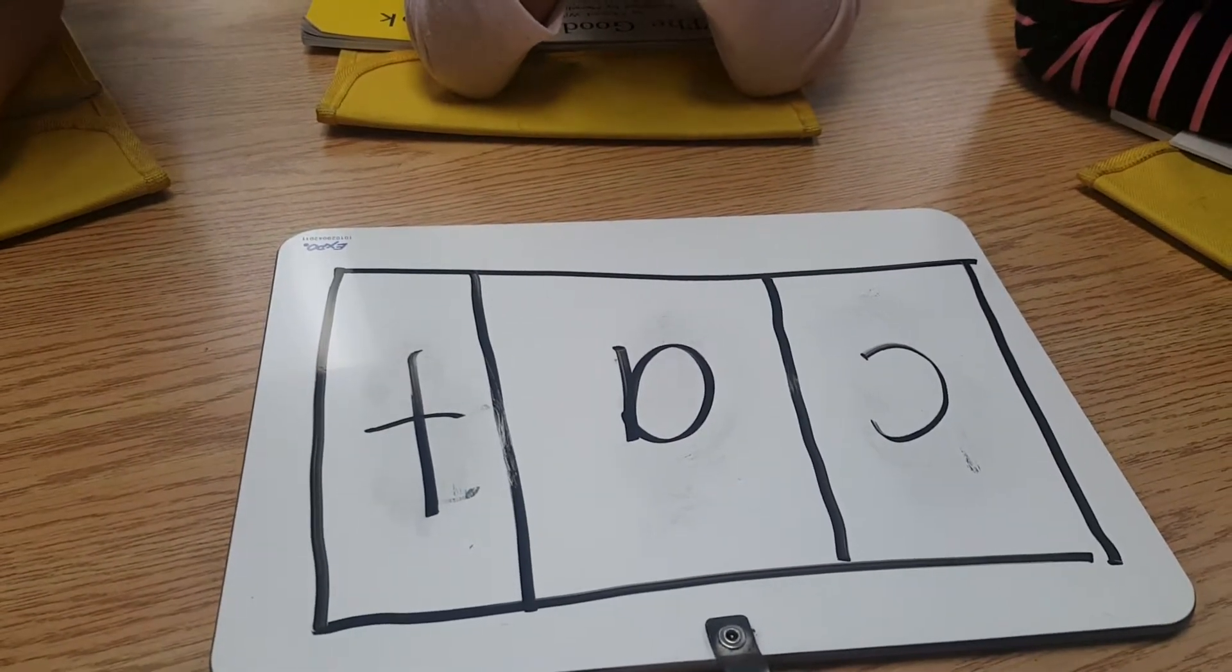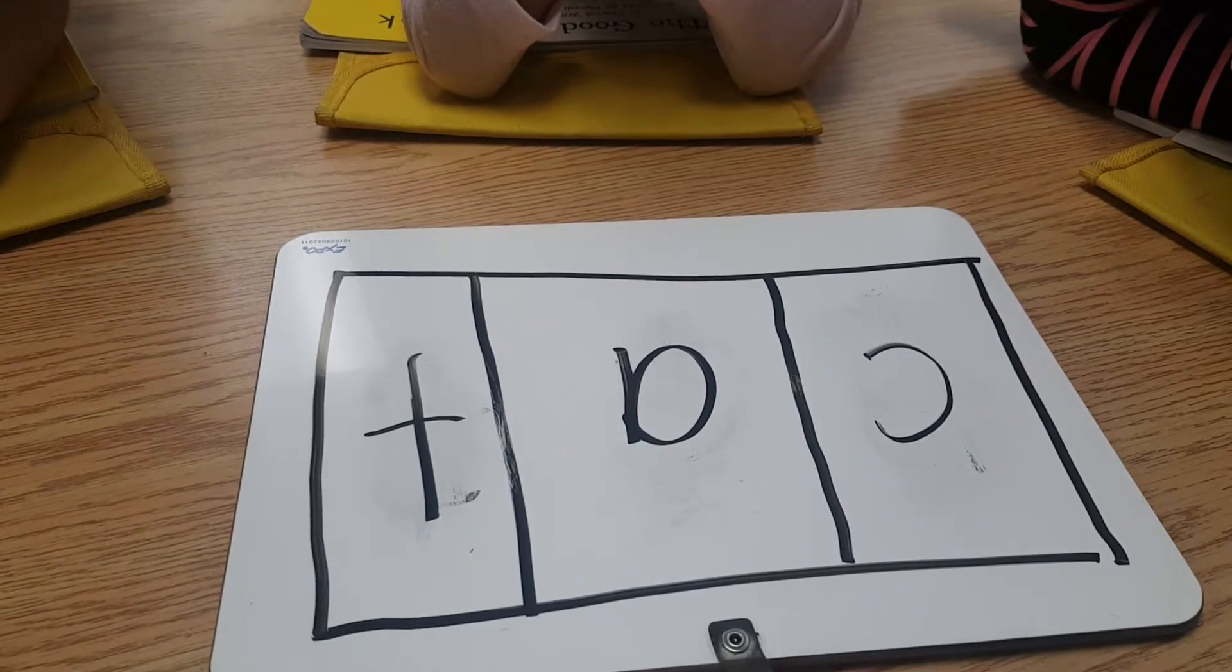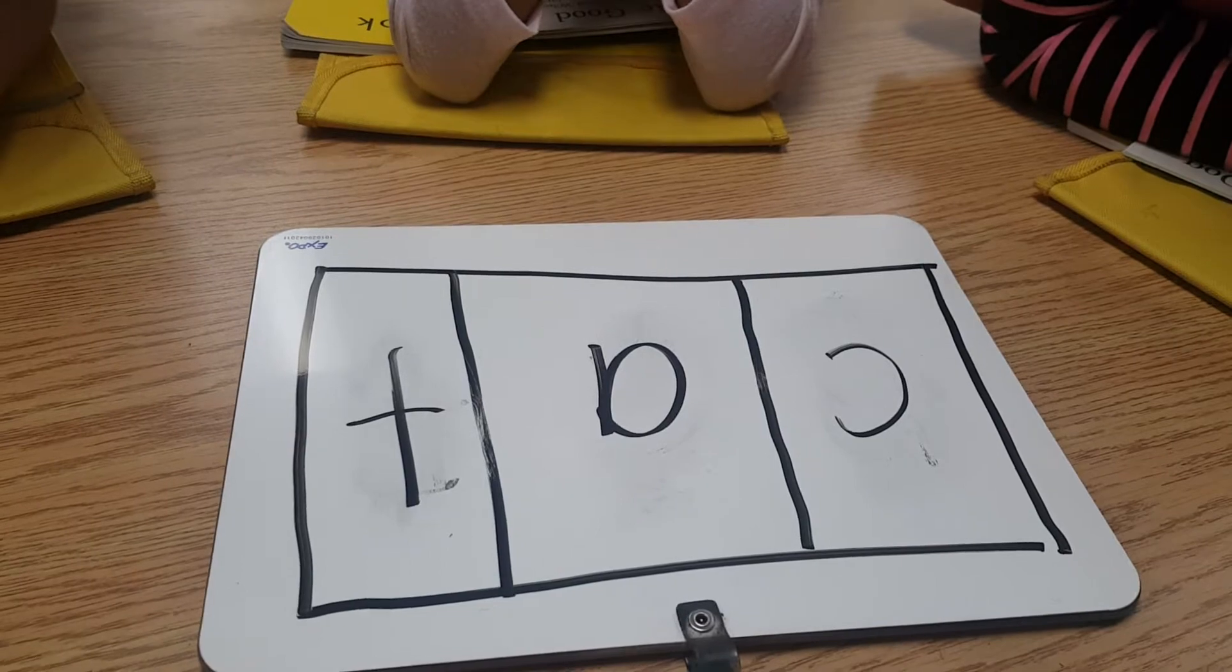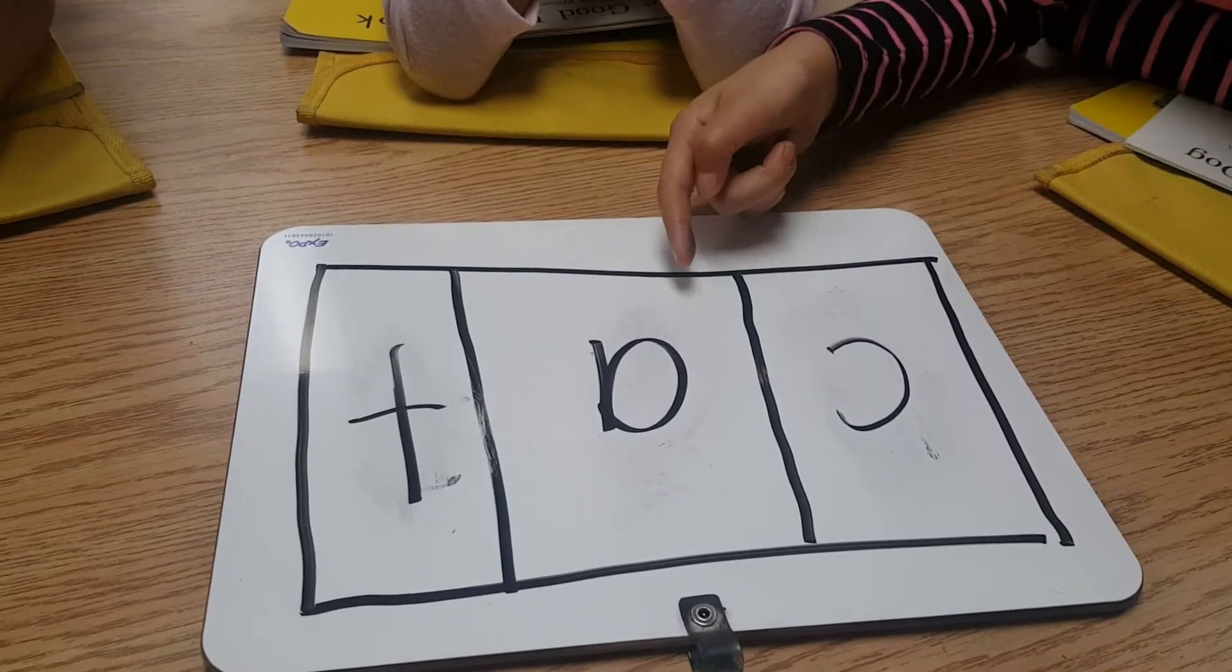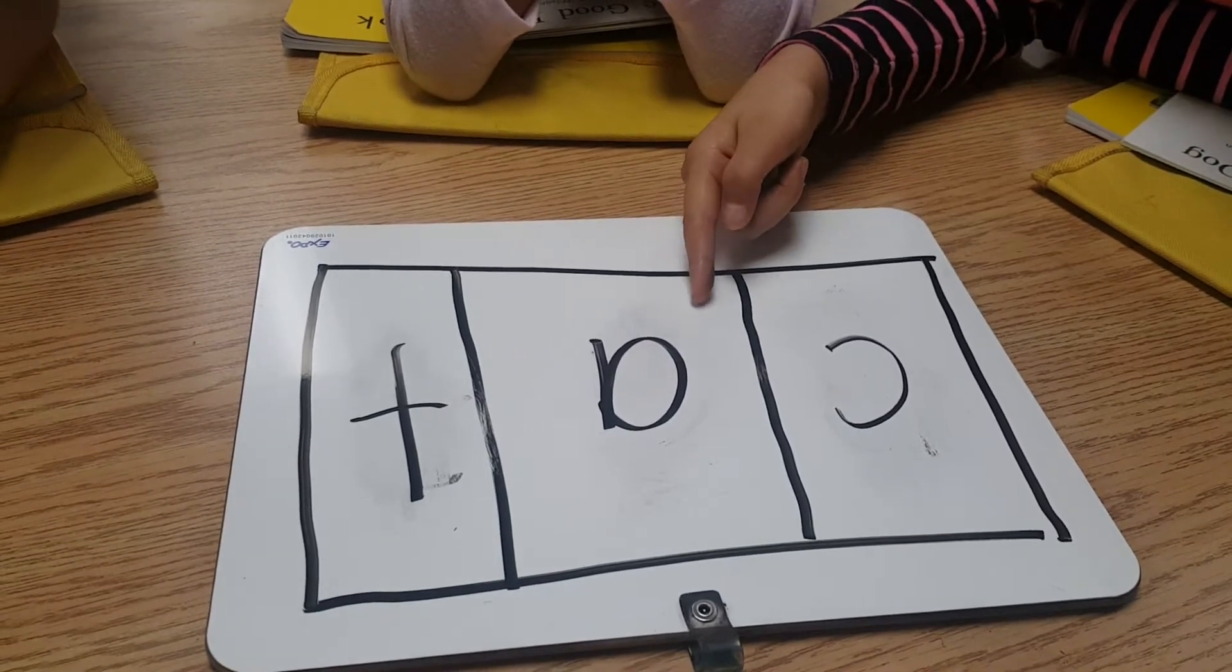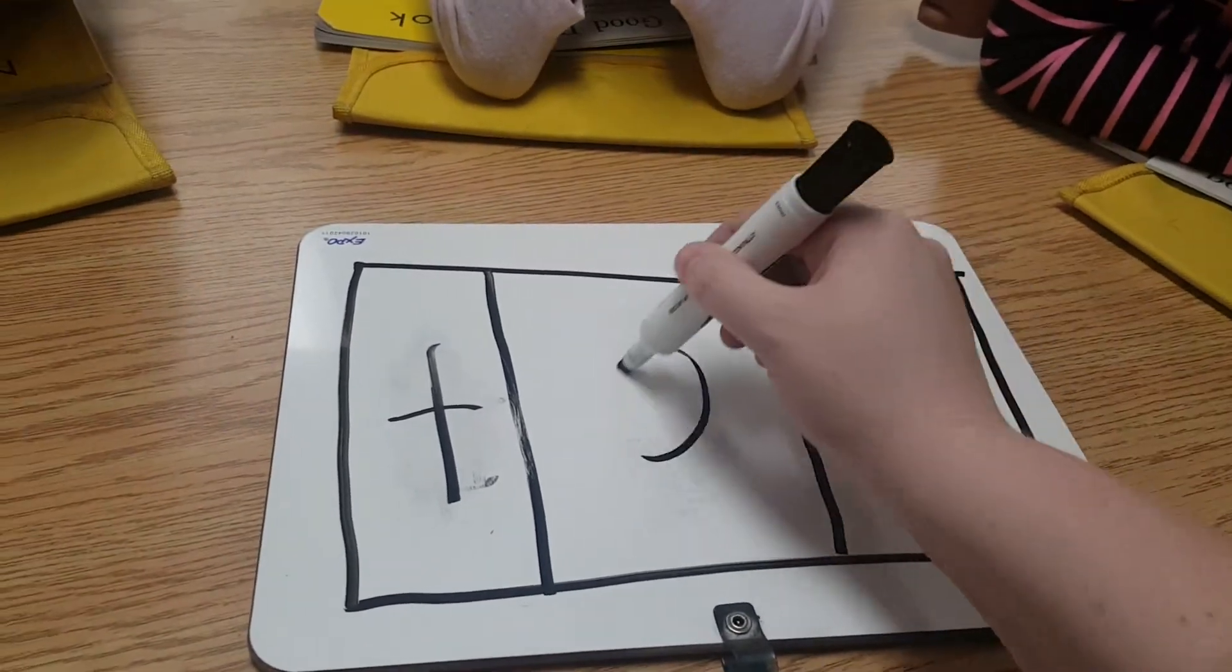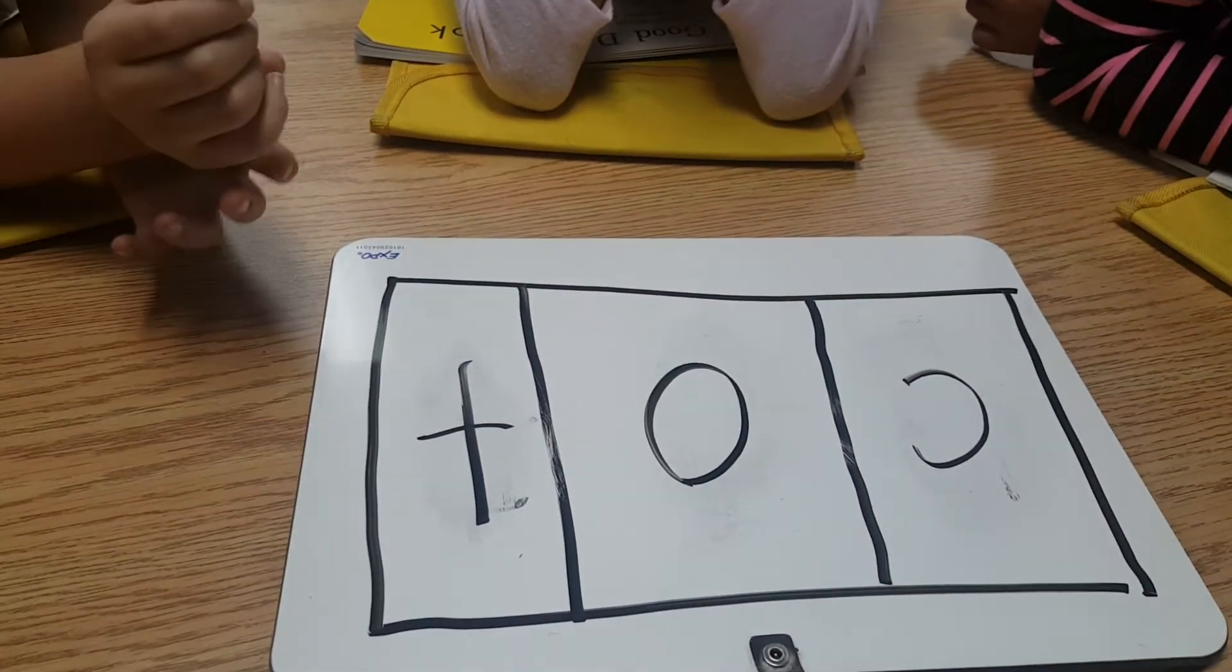Now, let's change cat to cot, Brianna. Change the A to an O. Okay, let's try it. C-O-T. Very good.